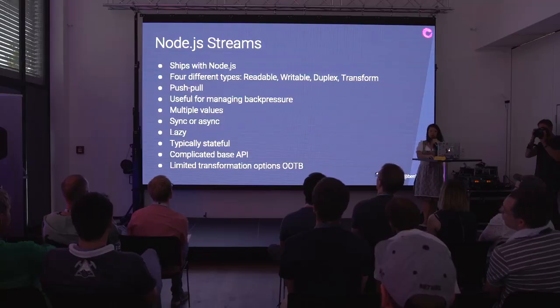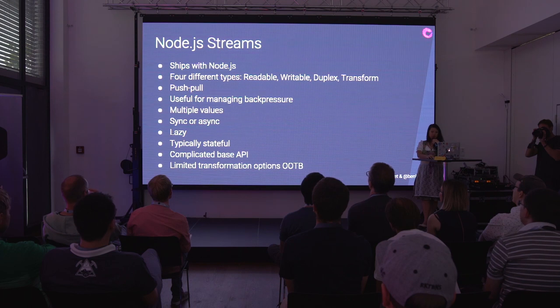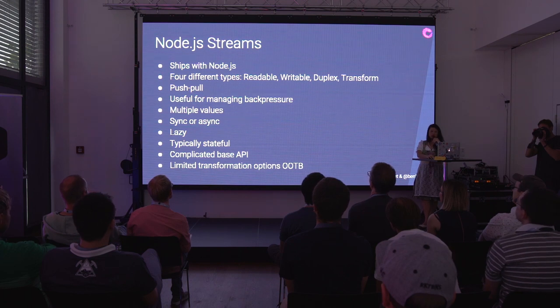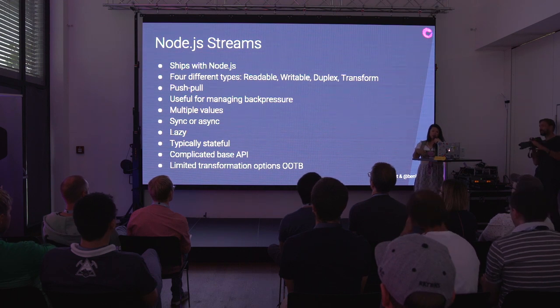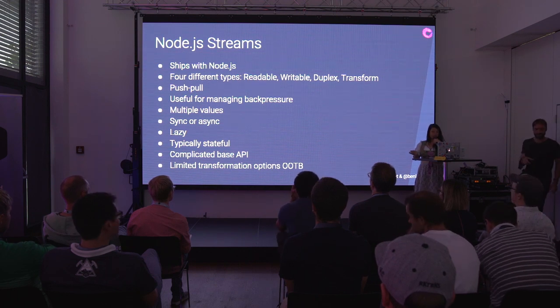Node streams ship with Node. There are four different types: readable, writable, duplex, and transform. These are push and pull — you have to pull and say 'I want a value' and then it'll push a value at you. Really useful for managing back pressure. Multiple values — synchronous or asynchronous. Generally lazy, typically stateful. They have a complicated base API and limited transformation options out of the box.